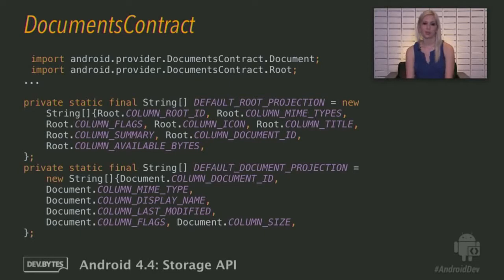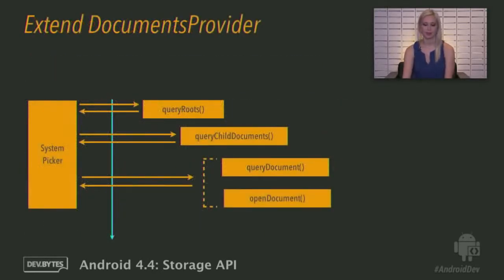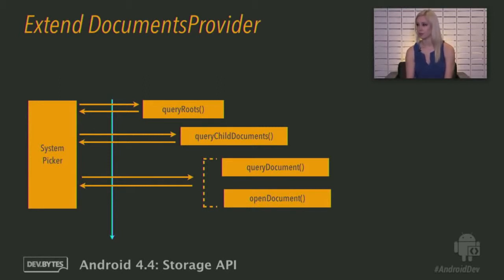How do you implement a provider? You must extend DocumentsProvider. It's an abstract class and it has a minimum of four methods you must implement yourself. They're called in this order: QueryRoots, followed by QueryChildDocuments, and finally possibly either QueryDocument or OpenDocument. There are many more, but we're going to start with the most simple case, which is just supporting OpenDoc.